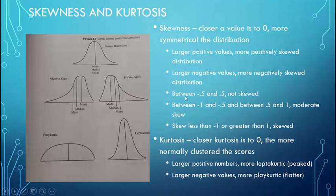When you run skewness in SPSS: a value closer to zero means a more normal or symmetrical distribution. If your skewness is between -0.5 and +0.5, the data isn't really skewed. Between -1 and -0.5, or +0.5 and +1, indicates moderate skew. Less than -1 or greater than +1 means you have a substantially skewed distribution.